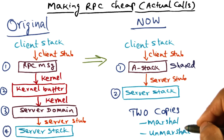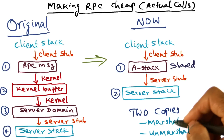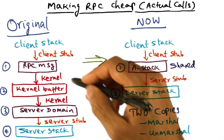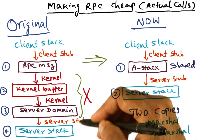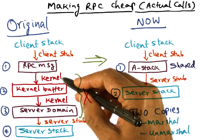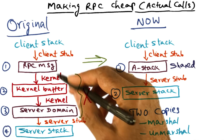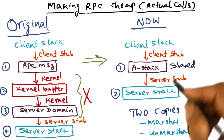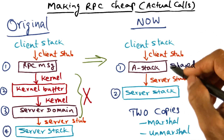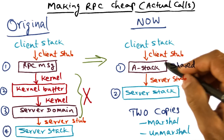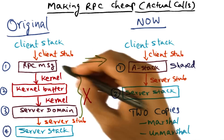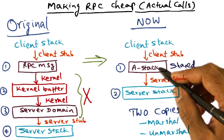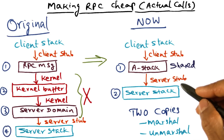It is in the space of the client that the client stub makes this copy of the arguments into the A stack, and similarly it is in the space of the server domain that the unmarshalling is happening. We've basically taken the original four copies and gotten rid of the two copies that were being done inside the kernel — one into the kernel and one out of the kernel. And even though we're calling these copies, they are really not as tedious as creating an RPC message; it is a more efficient way of passing information between the client and the server using the A stack.